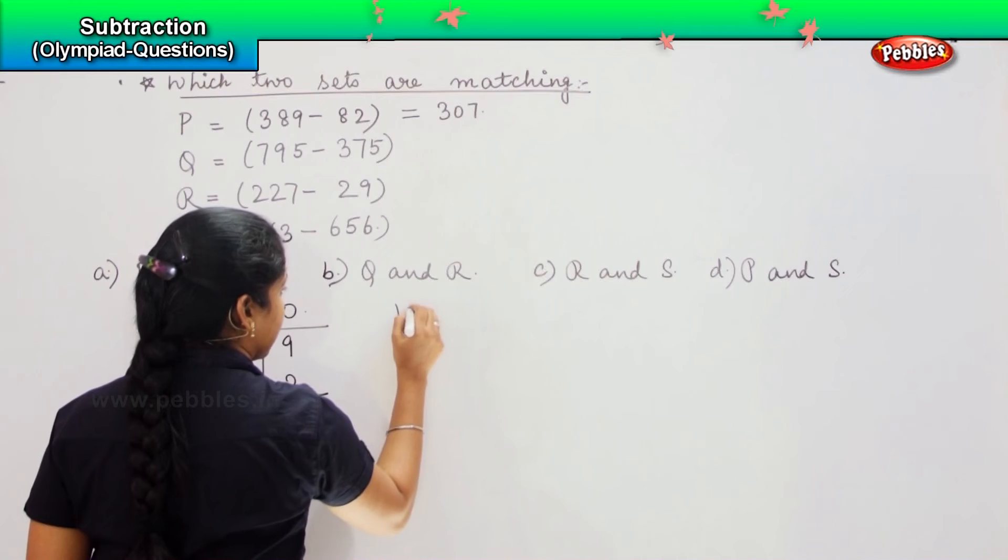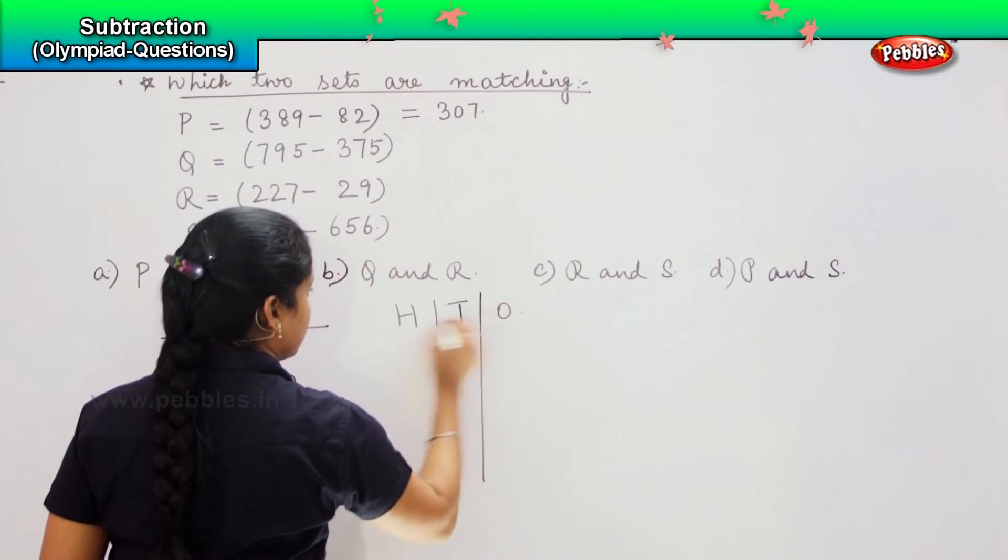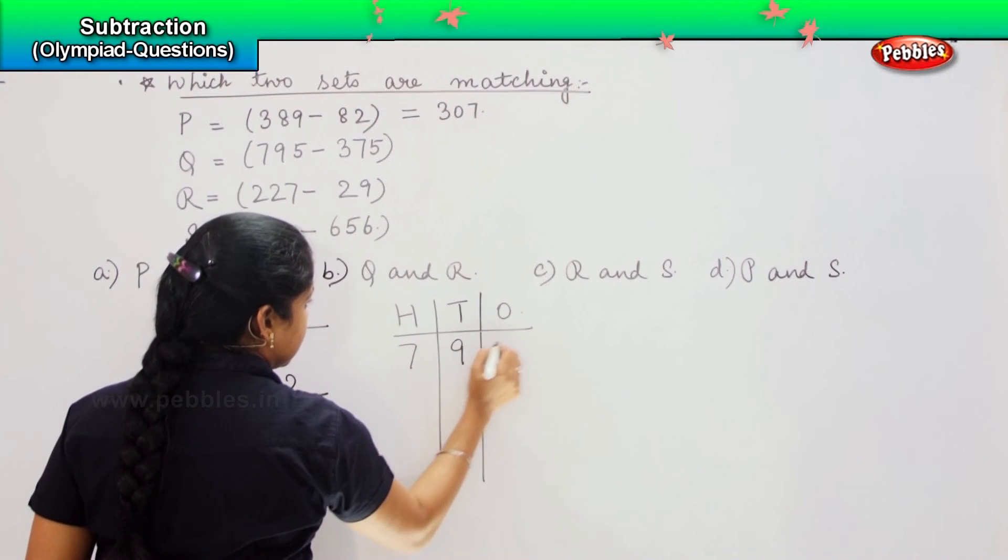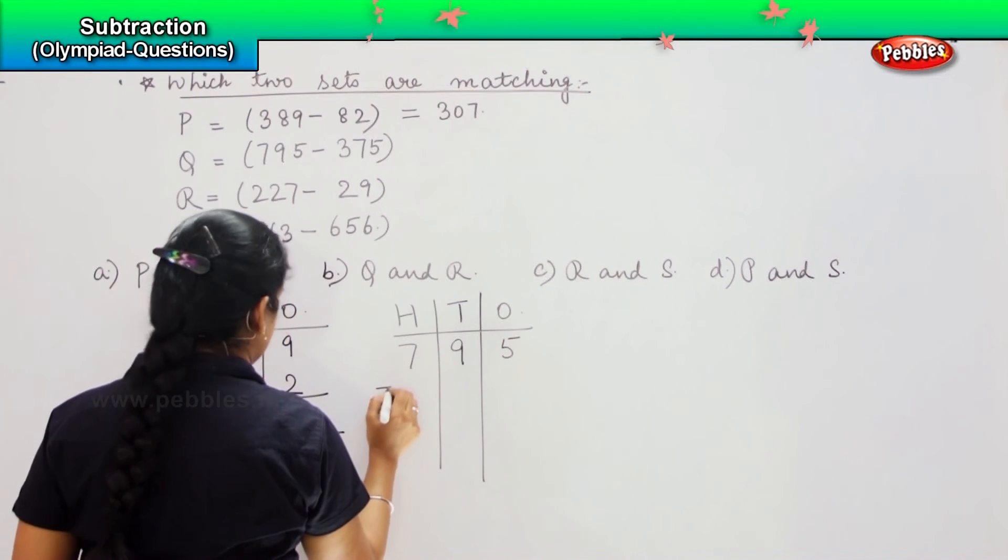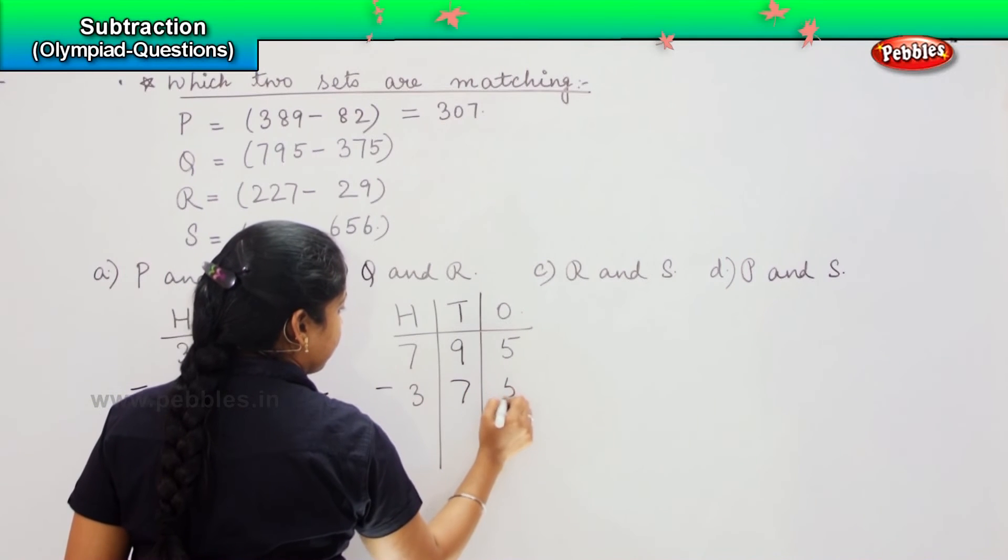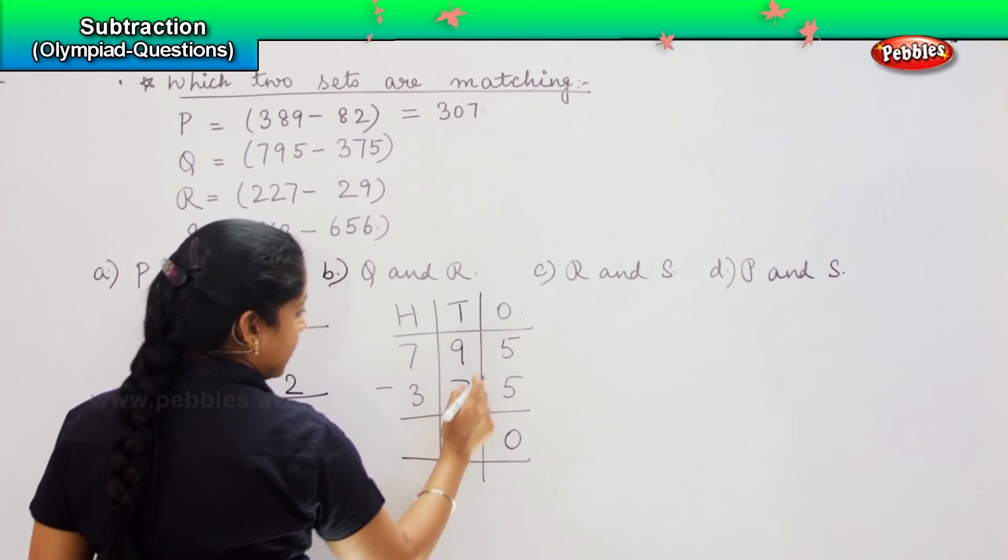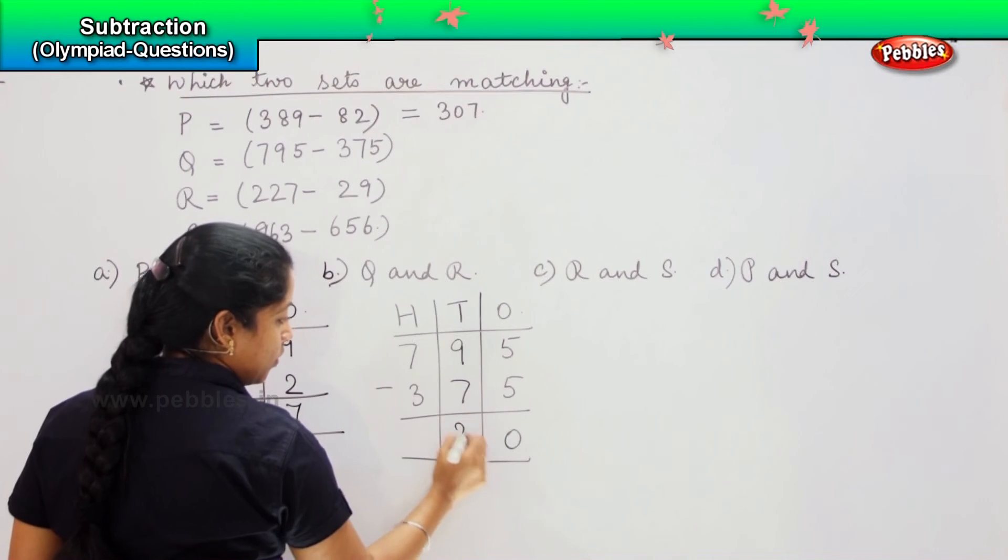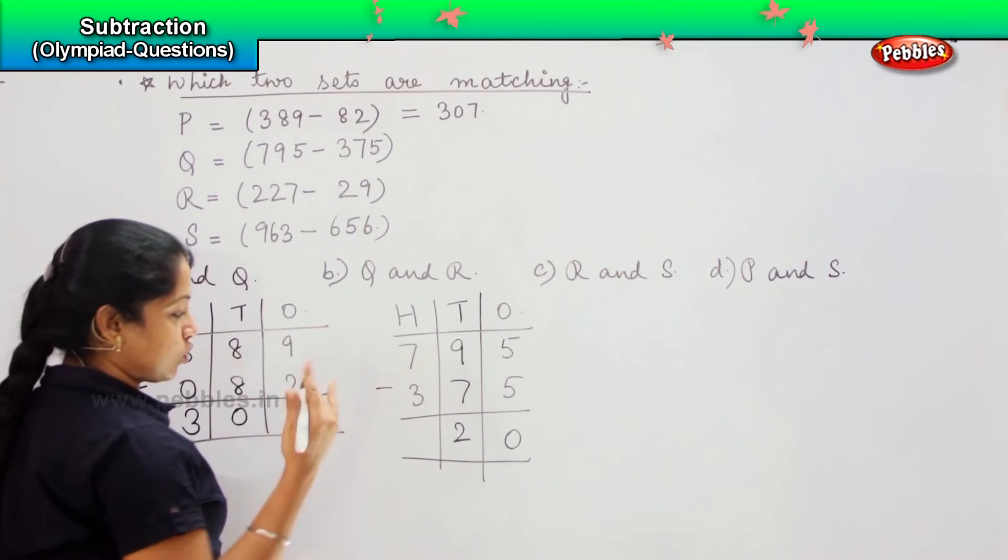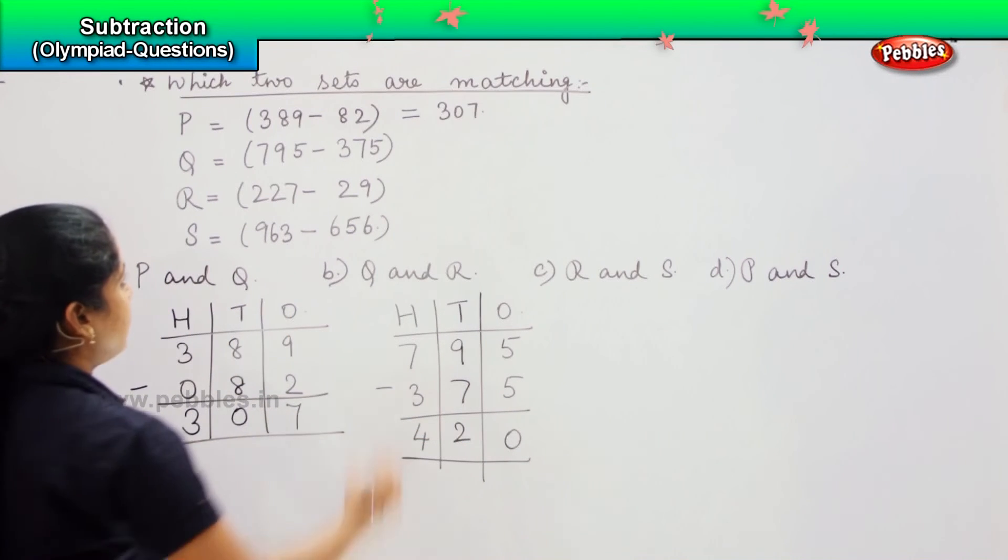Coming to the next one, H, T, O. Q says 795 minus 375. So 5 minus 5 is 0, 9 minus 7 is 2, and 7 minus 3 is 4. So answer is 420.